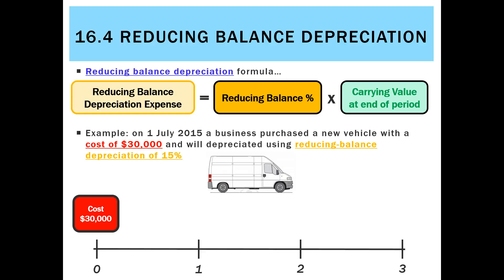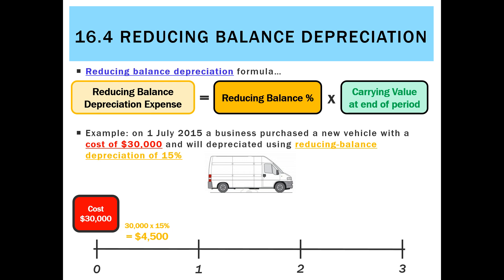At the beginning of the asset's life, its cost is $30,000. So for reducing balance depreciation, we take our percentage of 15% and multiply it by the carrying value of $30,000. The depreciation expense in year one will be $4,500. The carrying value going forward will be the cost of $30,000 less the $4,500 depreciated, leaving a carrying value at the end of the first year of $25,500.